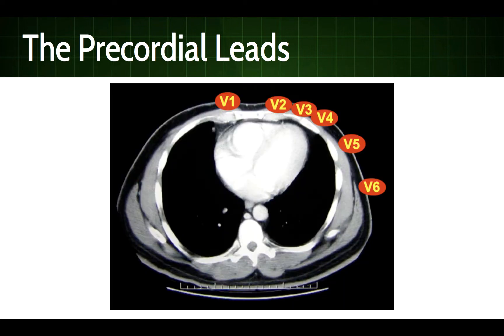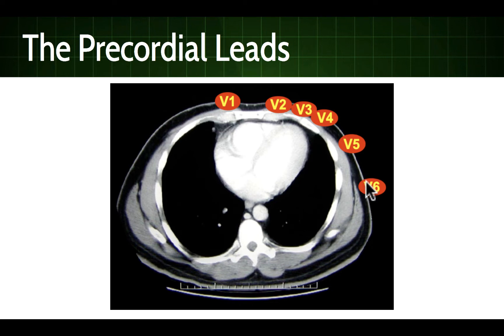Here's a CT scan showing a similar idea. You can see the patient's heart, with V1 and V2 looking from a more superior position, V3 and V4 looking over the anterior wall, and V5 at the anterior axillary line and V6 at the mid-axillary line clearly oriented along the lateral aspect of the heart. Let me now show that to you on a skeleton.